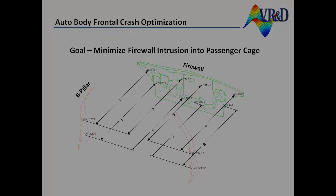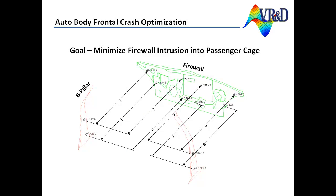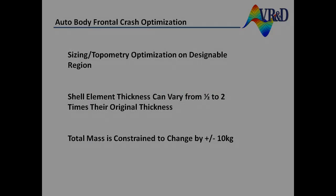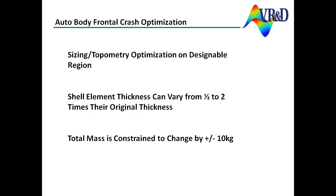This video illustrates the use of ESL Dyna in a frontal crash analysis. The goal in this case is to minimize the intrusion of the firewall into the passenger compartment. Eight points in the firewall were selected to measure the intrusion. Equivalent static load cases may be defined for any number of LS-Dyna time points. In this example, topometry optimization is used to modify individual shell element thicknesses in the designable region. The thickness of each element is set up to vary from one-half to two times their initial thickness.